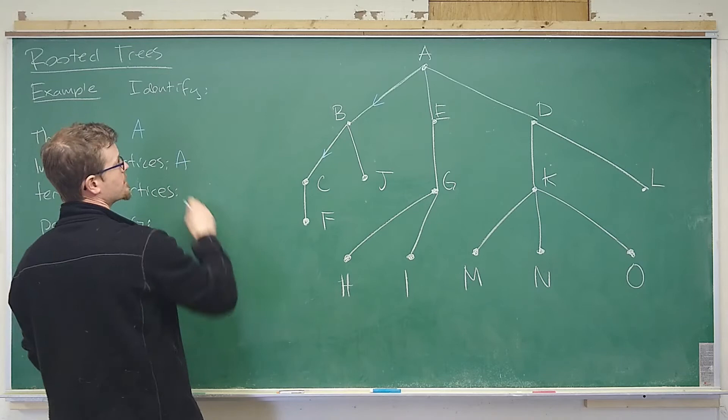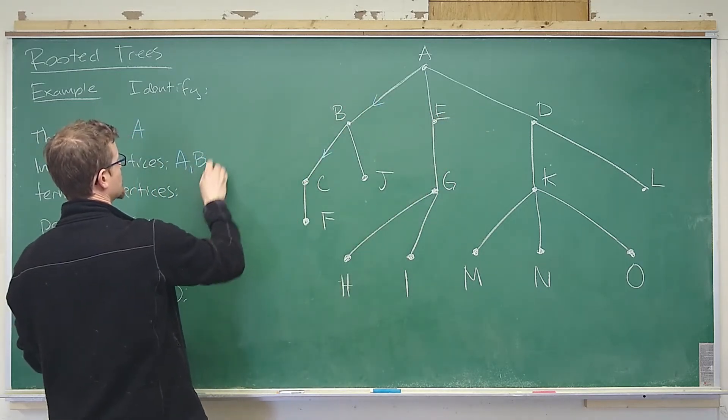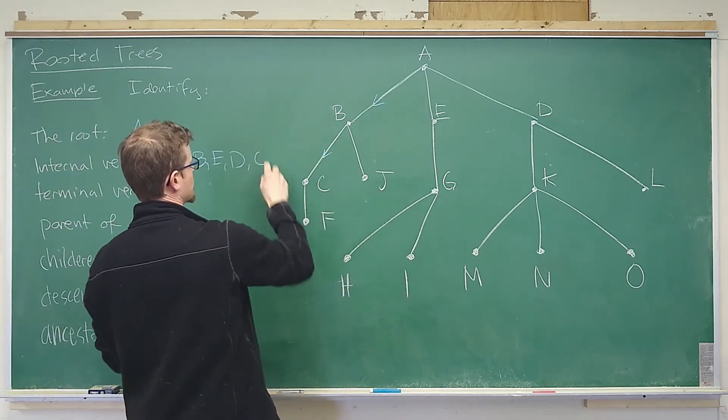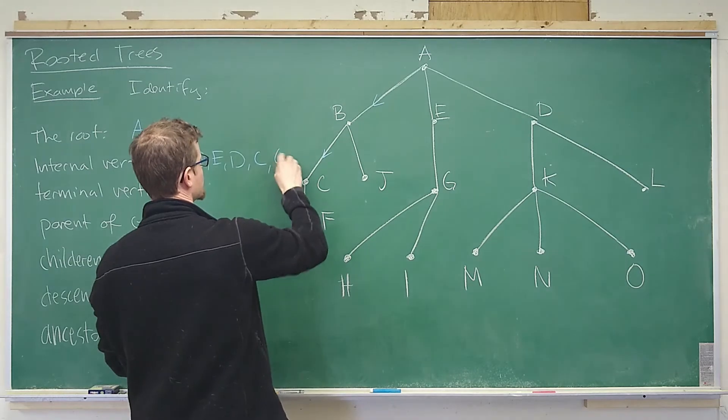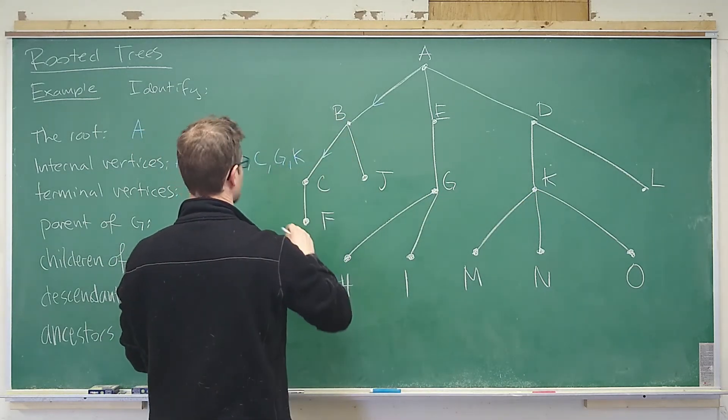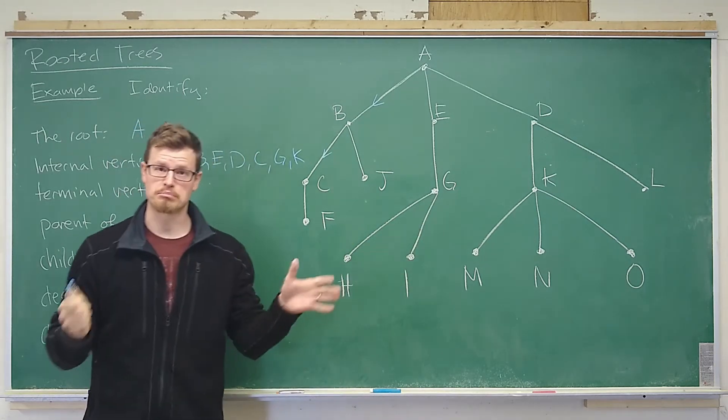So a is there. b, e, and d each have children. Excellent. C has a child. J does not. g does. K does. Let's see here. And that's it. That's all. Perfect.